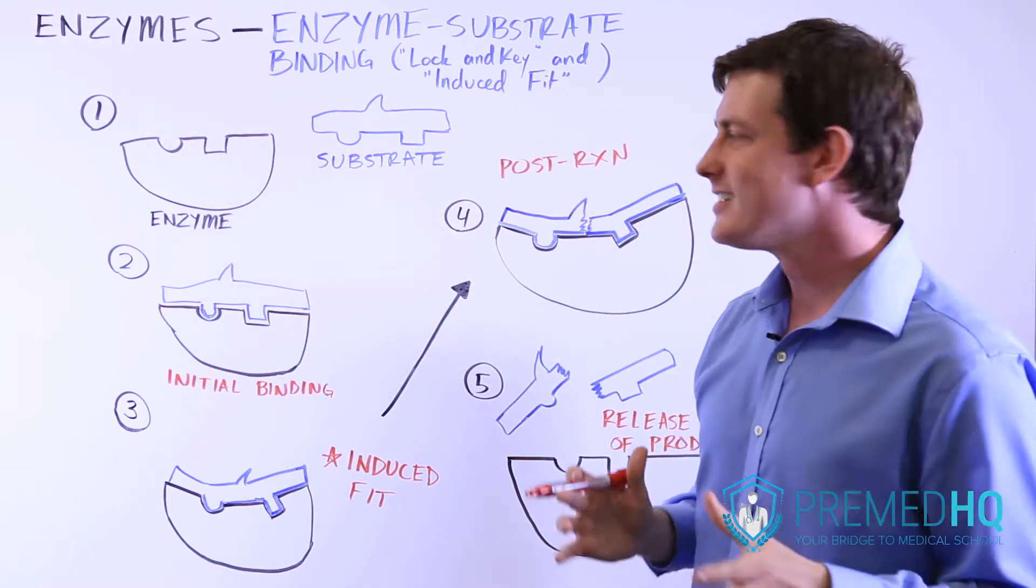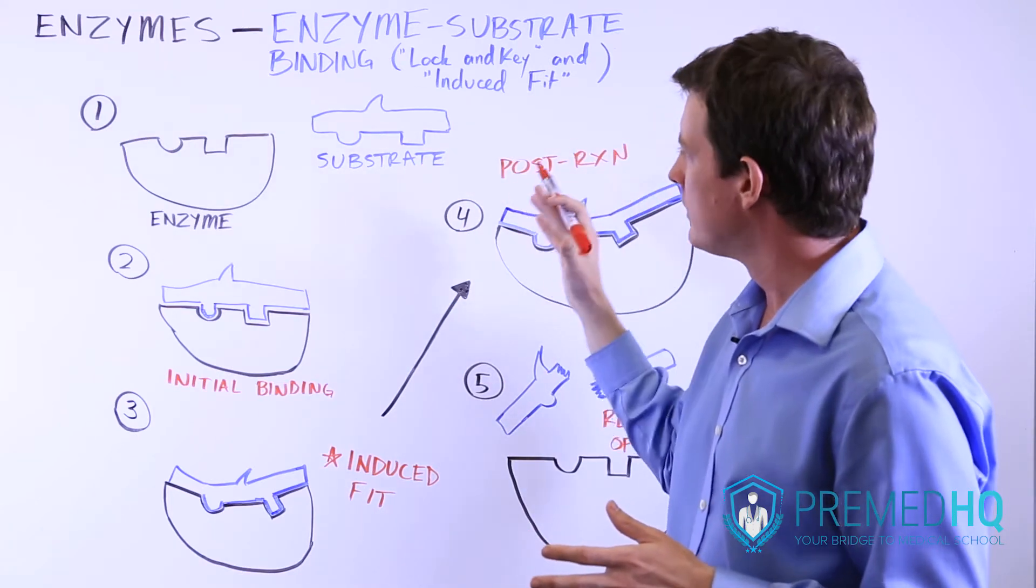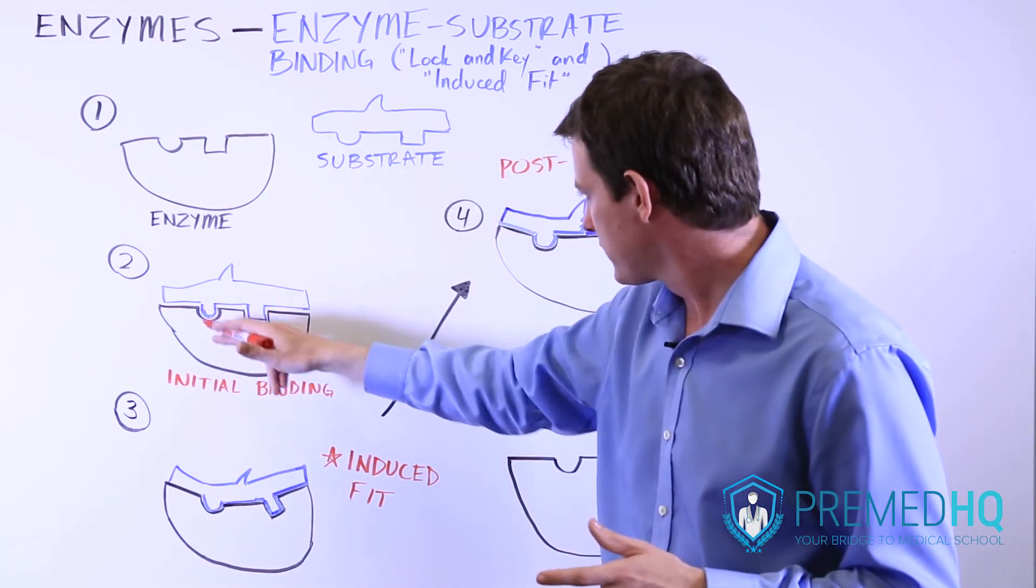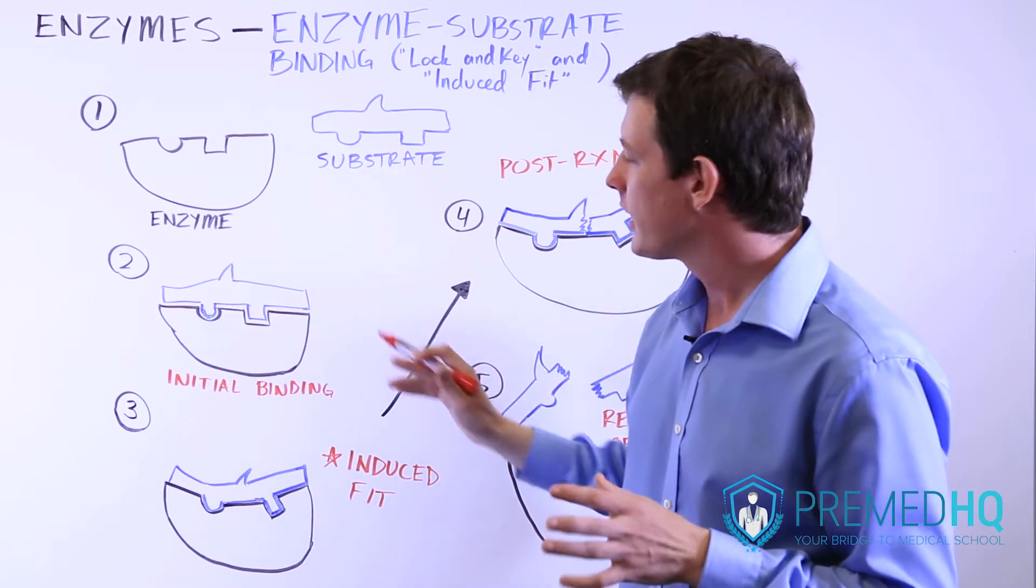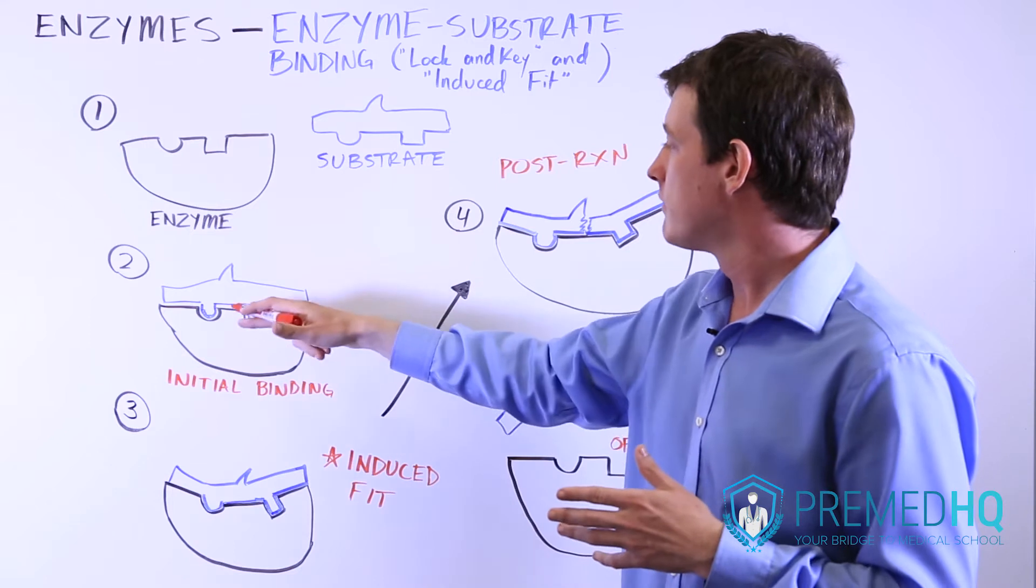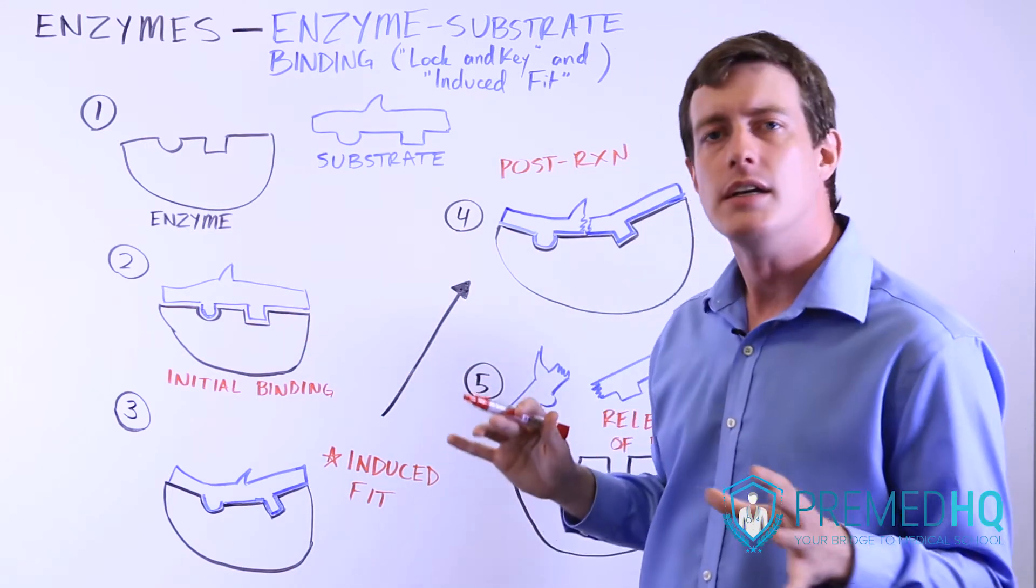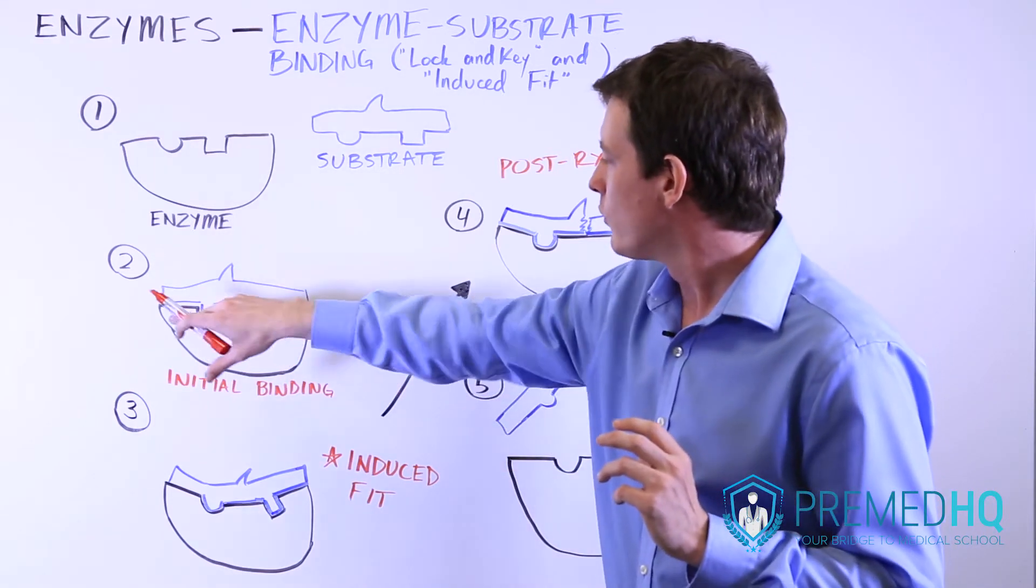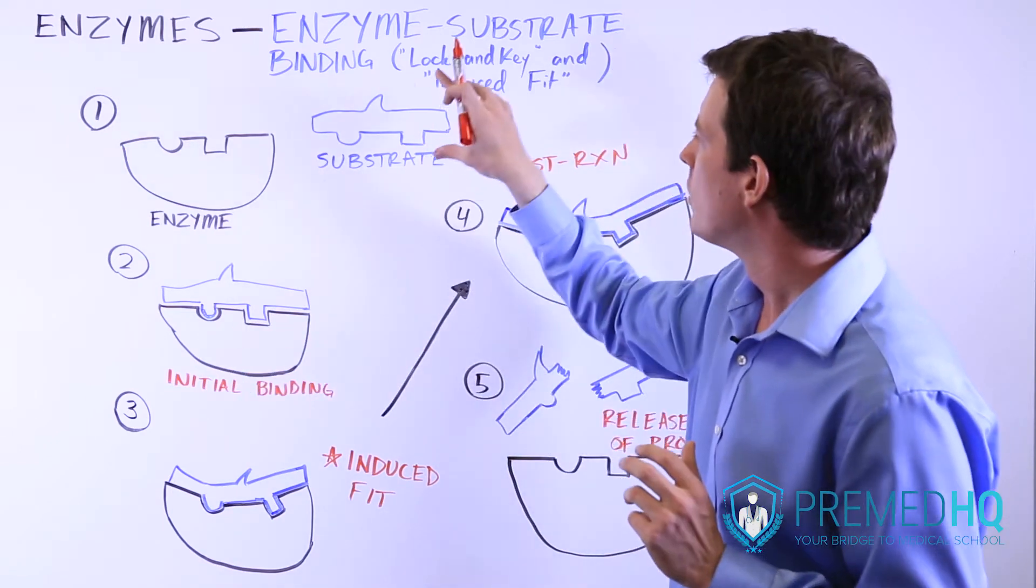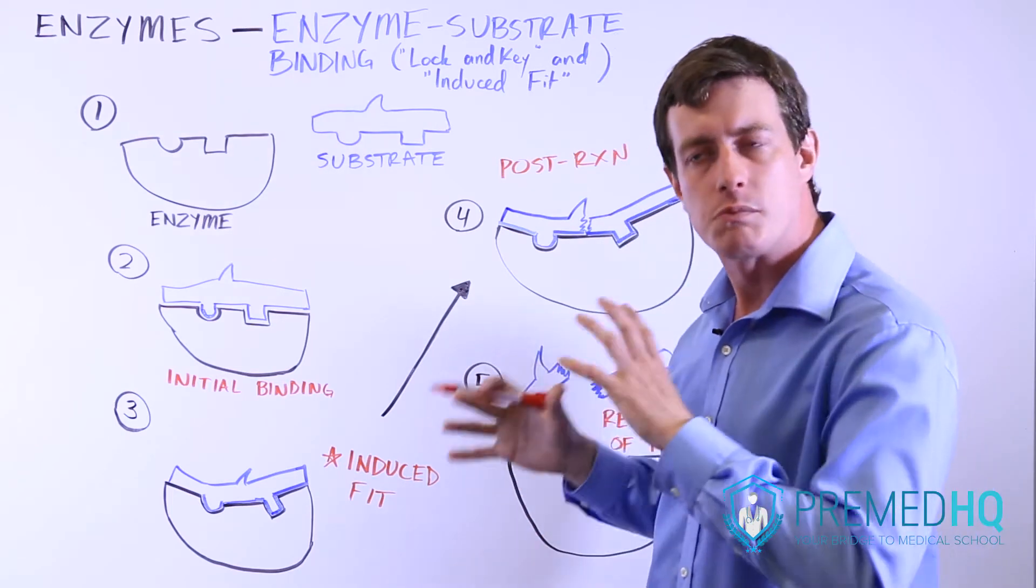Now there's another model and this is known as the induced fit model. Essentially what happens with this is that the substrate binds with the enzyme initially, and notice that it fits into that site but it's not a perfect fit. It's a slightly looser interaction. Sometimes the fact that it's a loose interaction is what allows an enzyme to have many different substrates because all they need to do is fit in somewhat well into that site. You have a stage of initial binding where the substrate first joins with the enzyme and it's sort of a loose spatial fit.